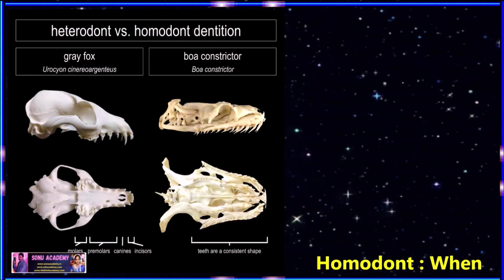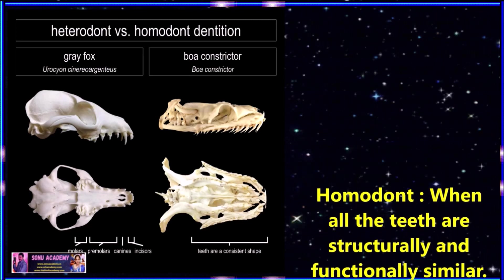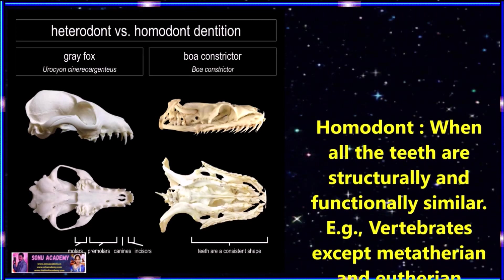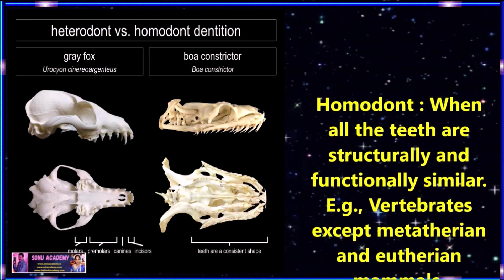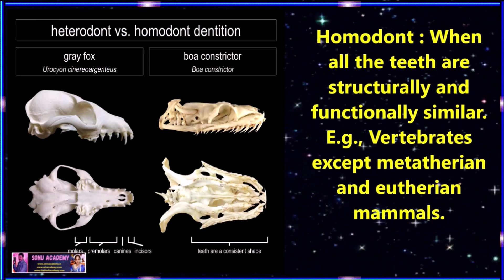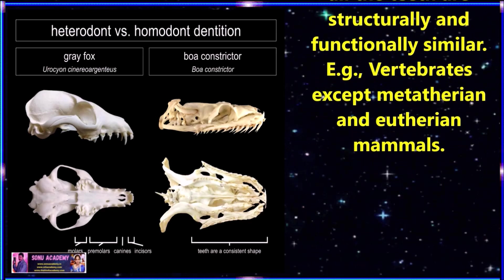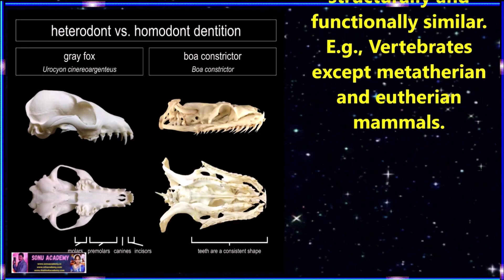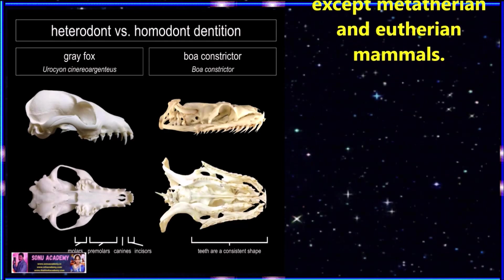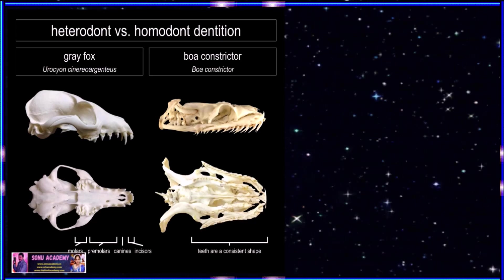Now let us see the different types of teeth like homodont, heterodont, and others. Homodont means when all the teeth are structurally and functionally similar. These types of teeth are called homodont teeth. Examples include vertebrates, except metatherian and eutherian mammals, where we can see this type of homodont teeth.